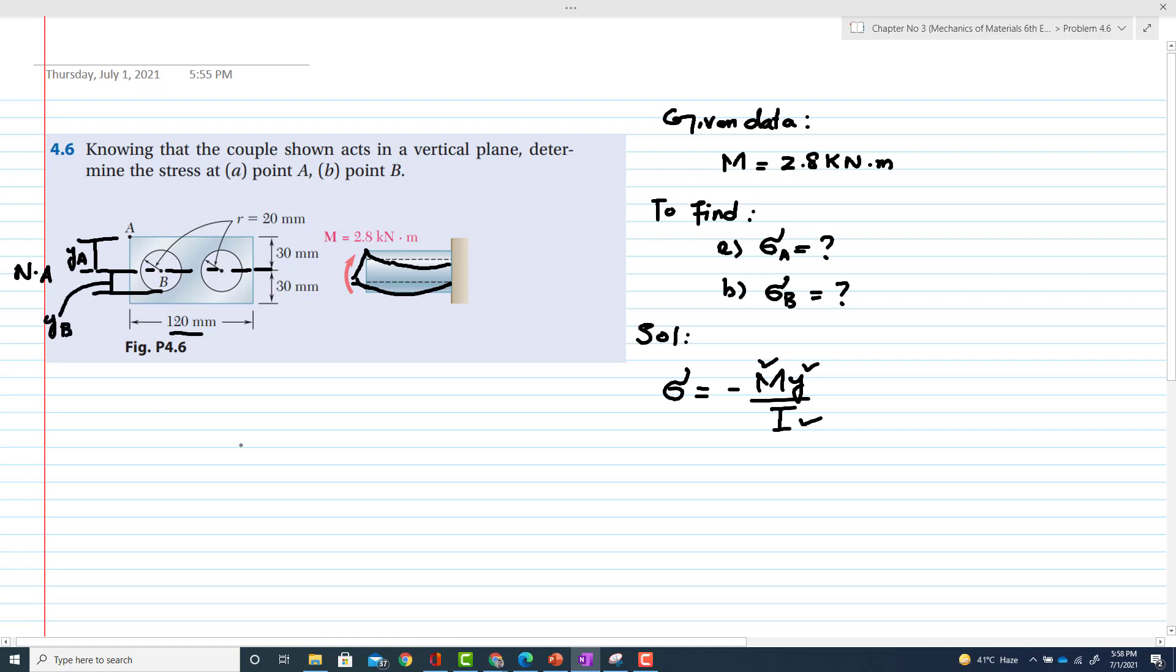The stress at point A will be σA = -MyA/I, and for stress at point B, σB = -MyB/I. So in both cases we have to find I.